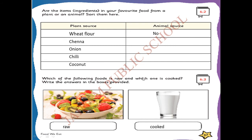Which of the following foods is raw? You know what raw and cooked food means - I already taught you. Raw means it's not cooked; cooked food means it is baked or heated. Write the answers in the boxes provided. First one - fruit salad: we can eat it as it is, so that is raw food. Next - milk: we can't drink without boiling, so it should be cooked.